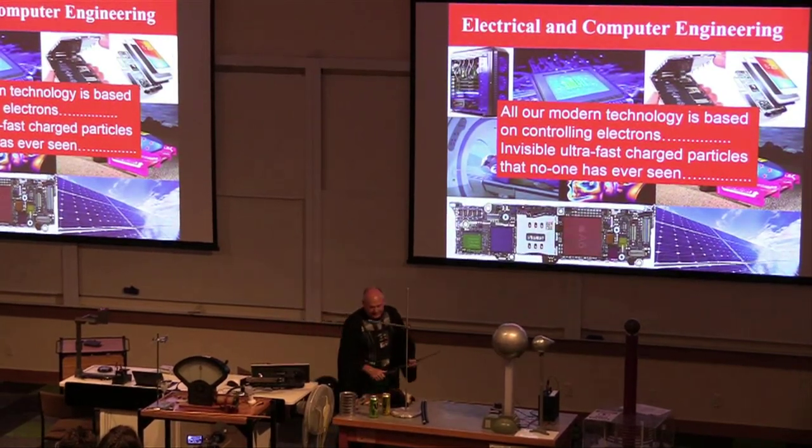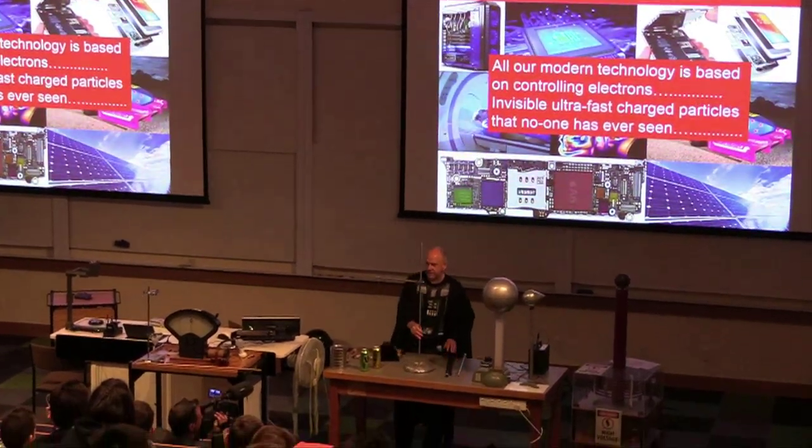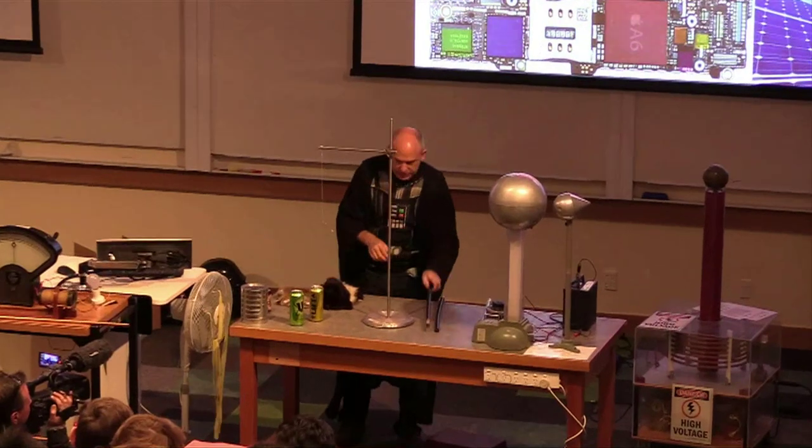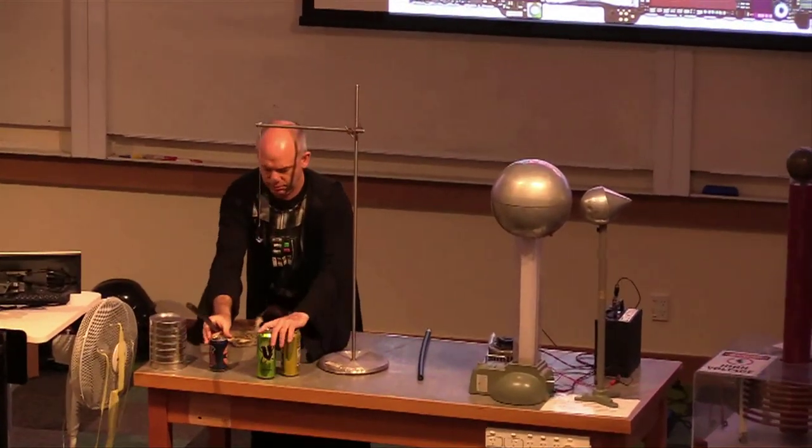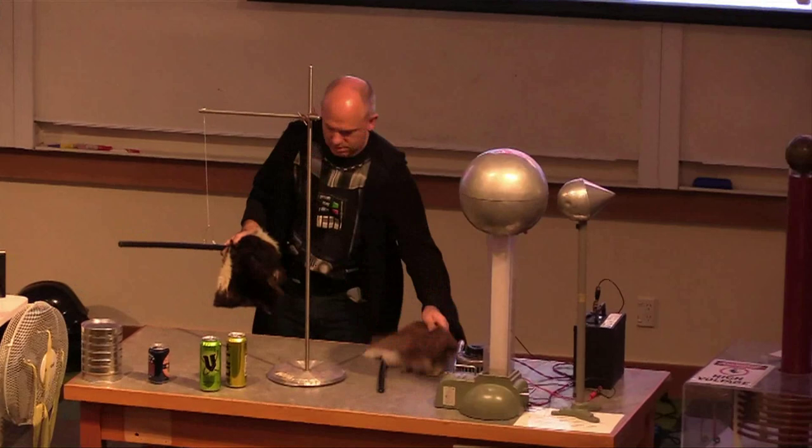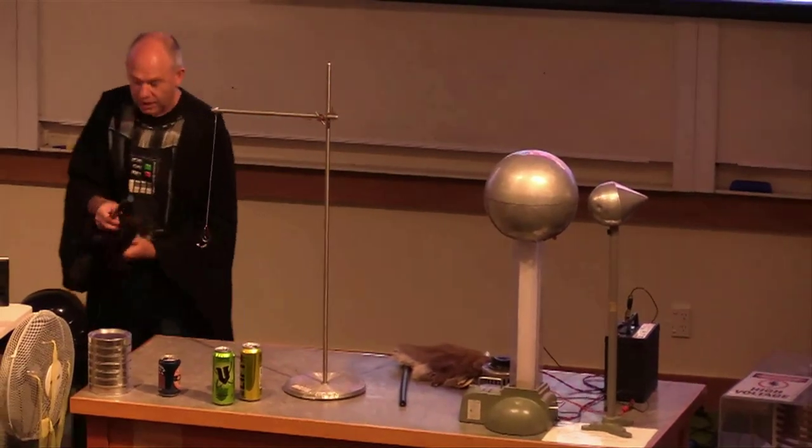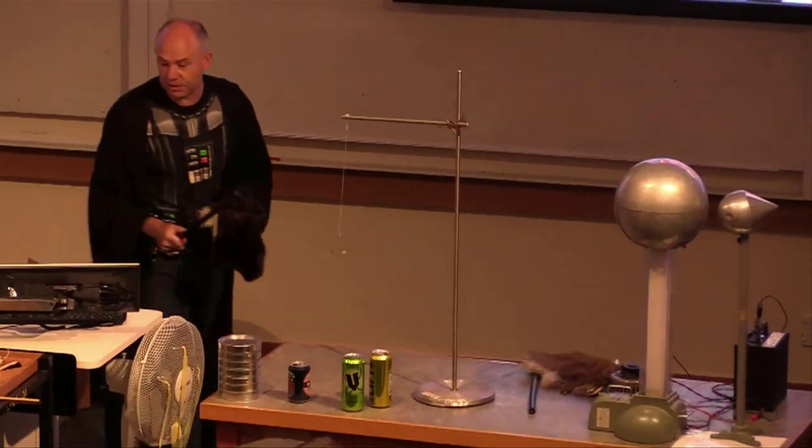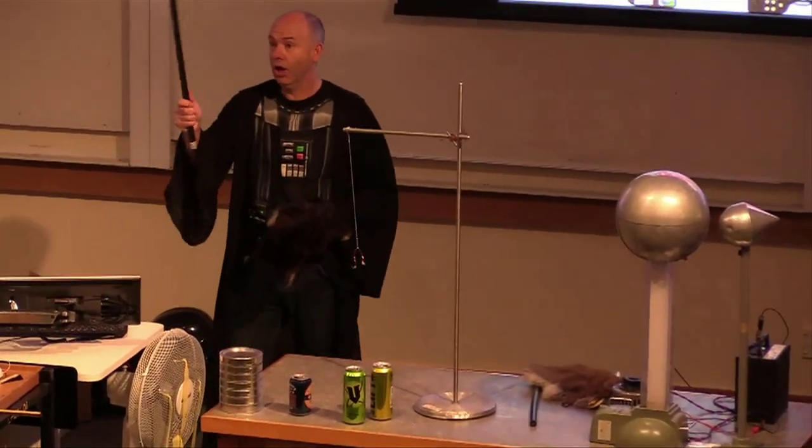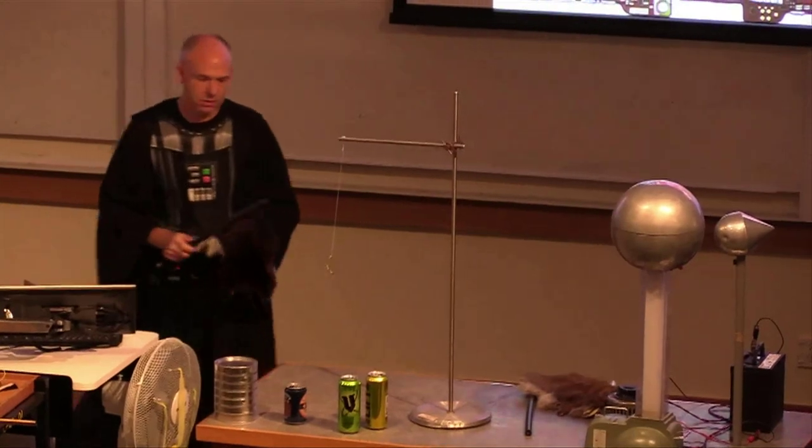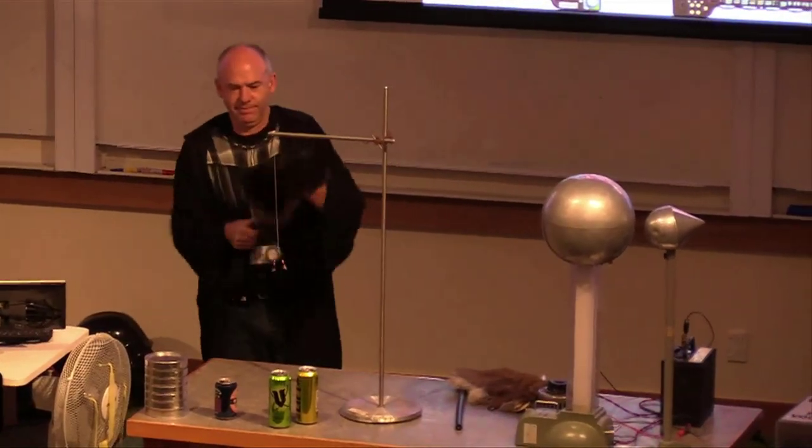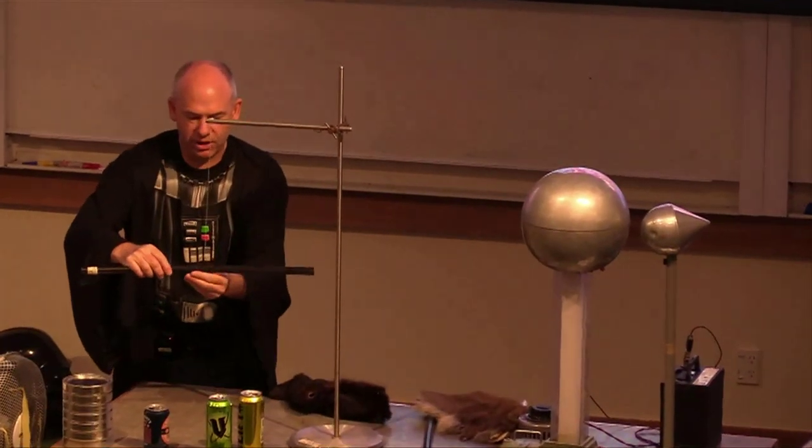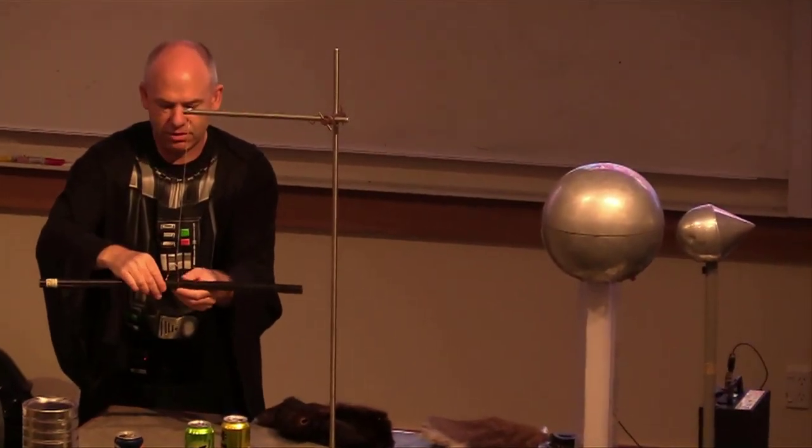So we can't see them, but I can show you their effect. What we've got here is just a simple rubber rod and a piece of dead possum. Now, if I rub the rod with the possum, I can transfer some of these electrons, these ultra-fast particles that no one's ever seen, onto the rubber rod. I'm placing some of these electrons, the things that we rely on for our modern technology, on the end of that rod.